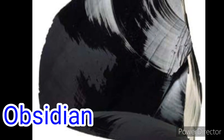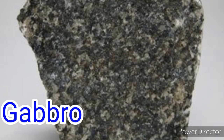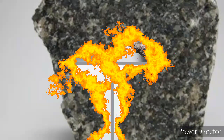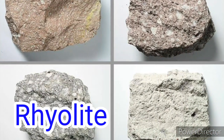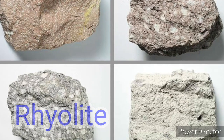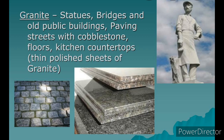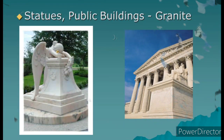Typically, igneous rocks that form below the earth's surface have more time to form mineral crystals, so they are usually large. But igneous rocks that form at the earth's surface don't have as much time to form mineral crystals, so they are usually small. The common uses for igneous rocks include building roads, statues, and steps.